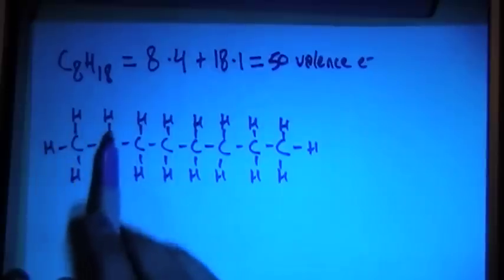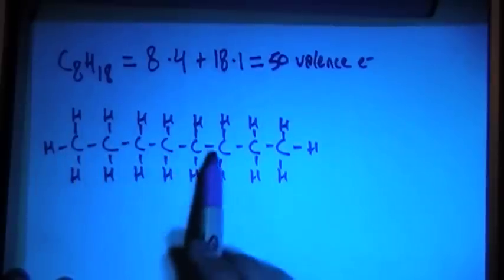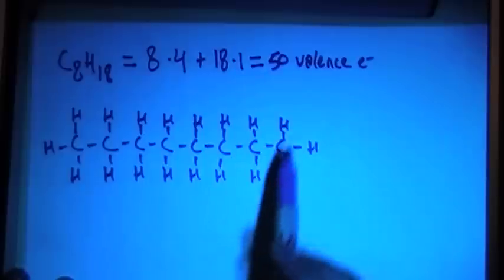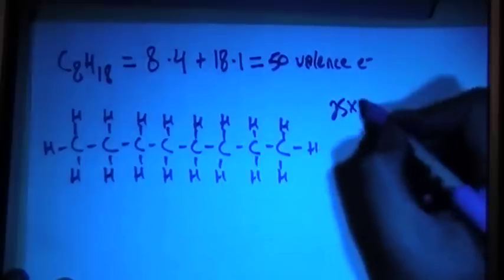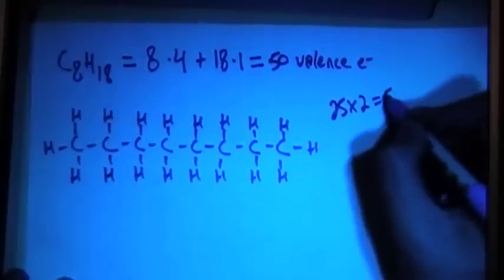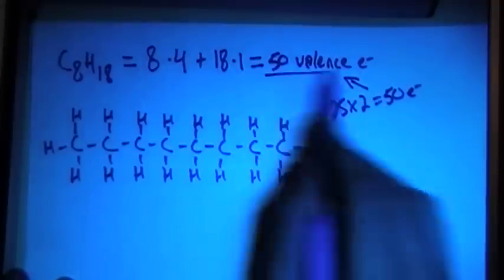1, 2, 3, 4, 5, 6, 7, 8, 9, 10, 11, 12, 13, 14, 15, 16, 17, 18, 19, 20, 21, 22, 23, 24, 25. So, 25 bonds times 2 electrons per bond is going to give us 50 electrons, which is what we needed from up here.